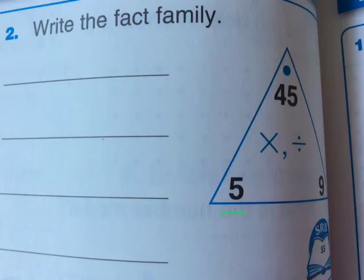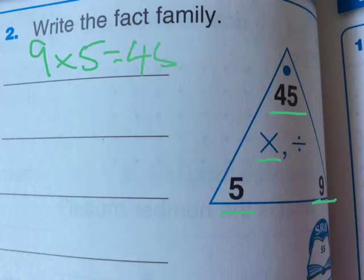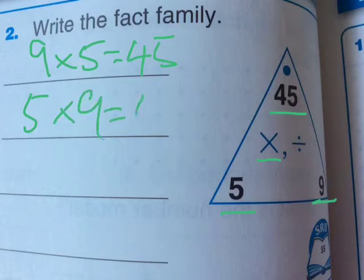Okay, so now we use 5 and 9, times it and turn it into 45. So, 5 times 9 equals 45. We write that down. 9 times 5 equals 45. Now, we do that the other way around. 5 times 9 equals 45.